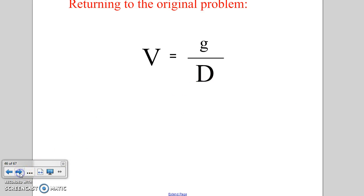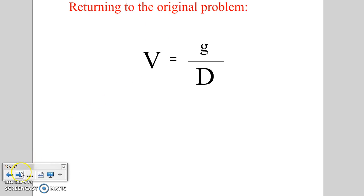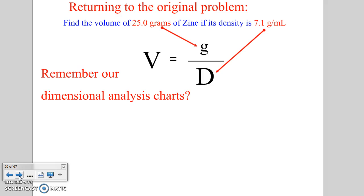Returning to the original problem that we were asked to solve: find the volume of 25 grams of zinc if its density is 7.1 grams per milliliter. 25 grams, we're given, that's our g. 7.1 grams per milliliter, that's our density.